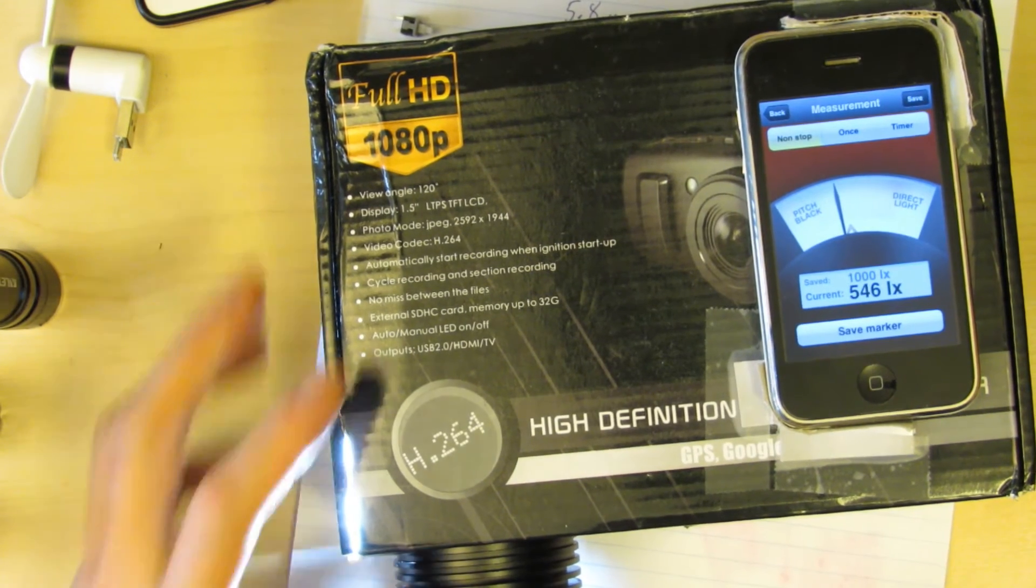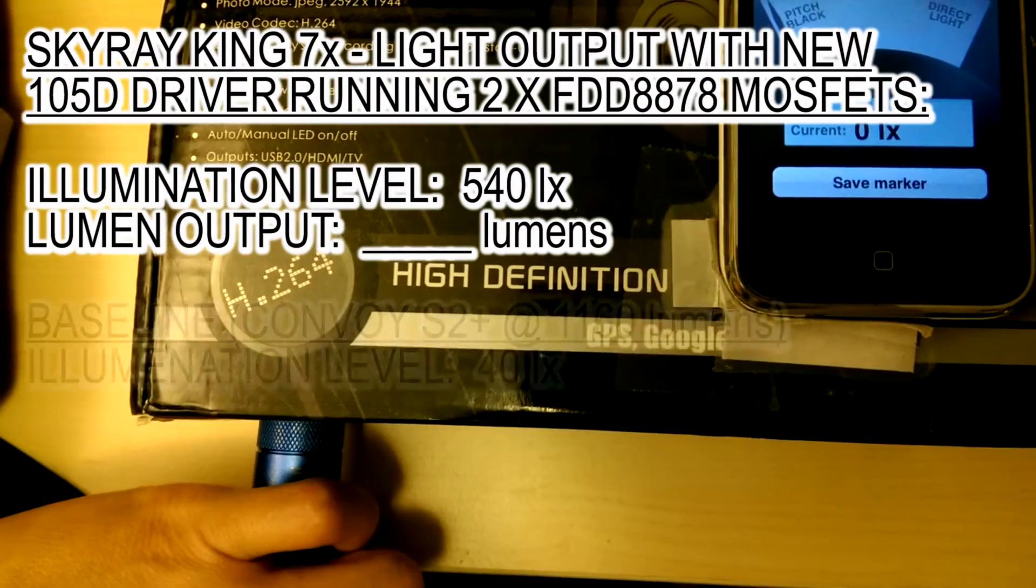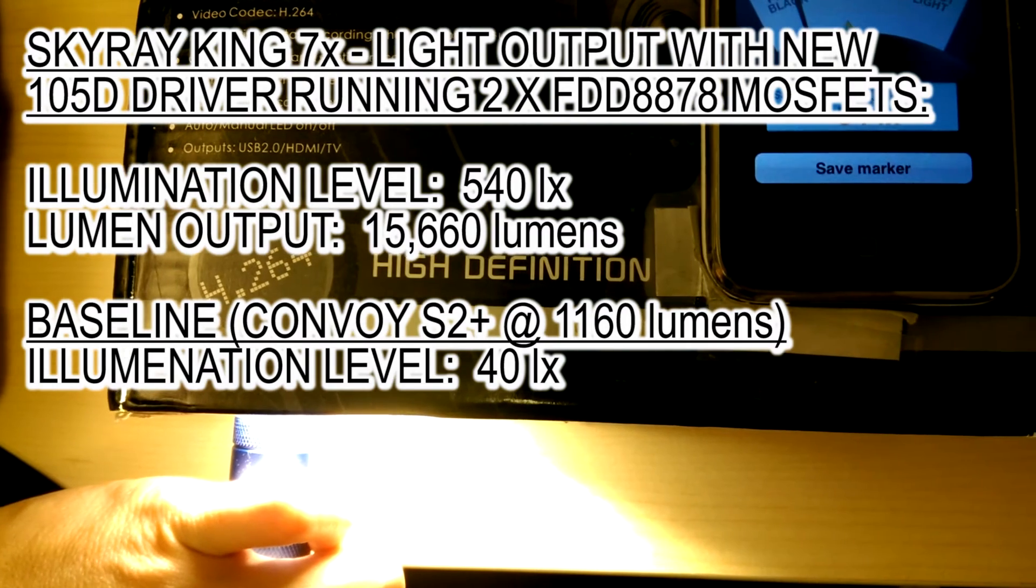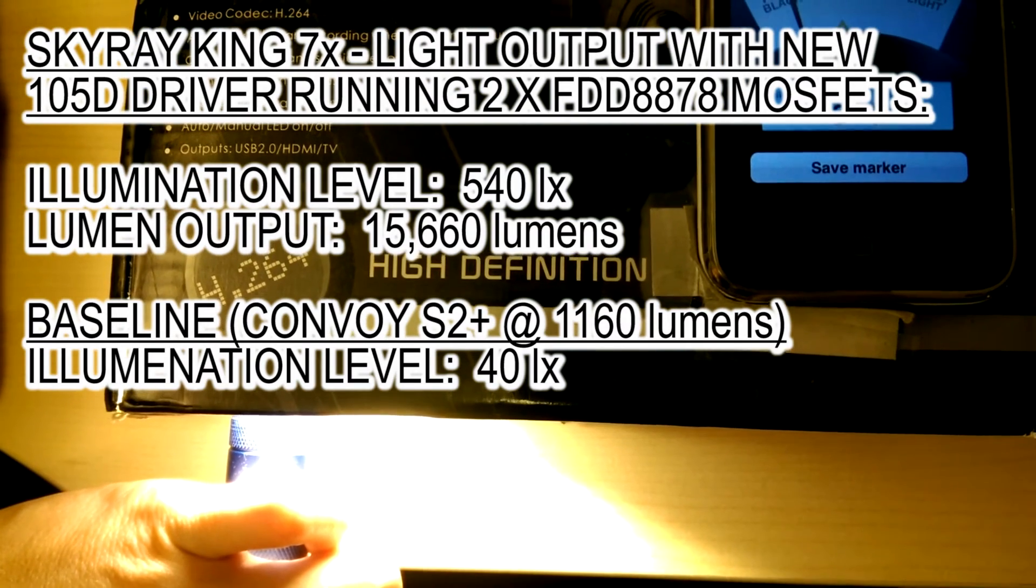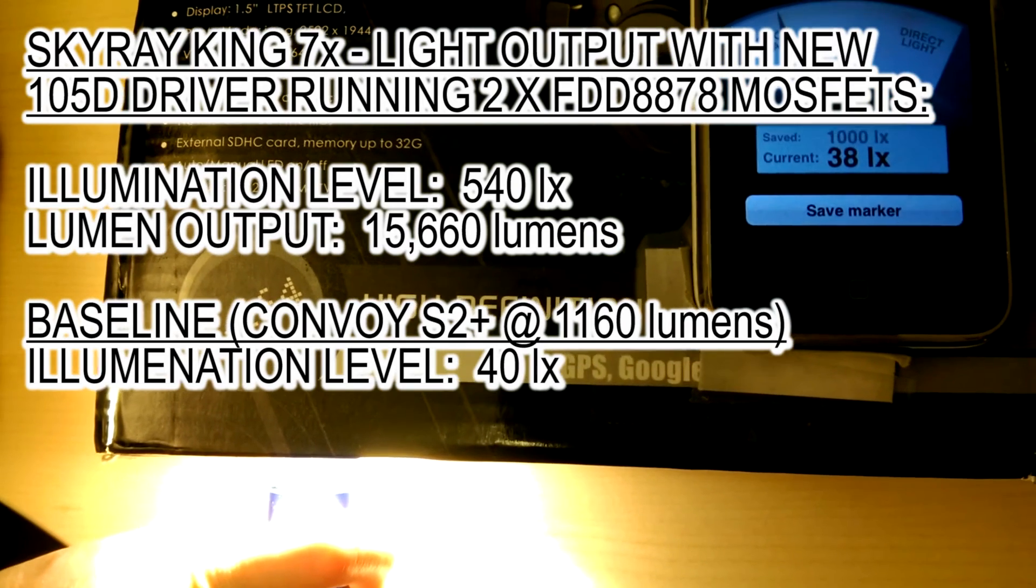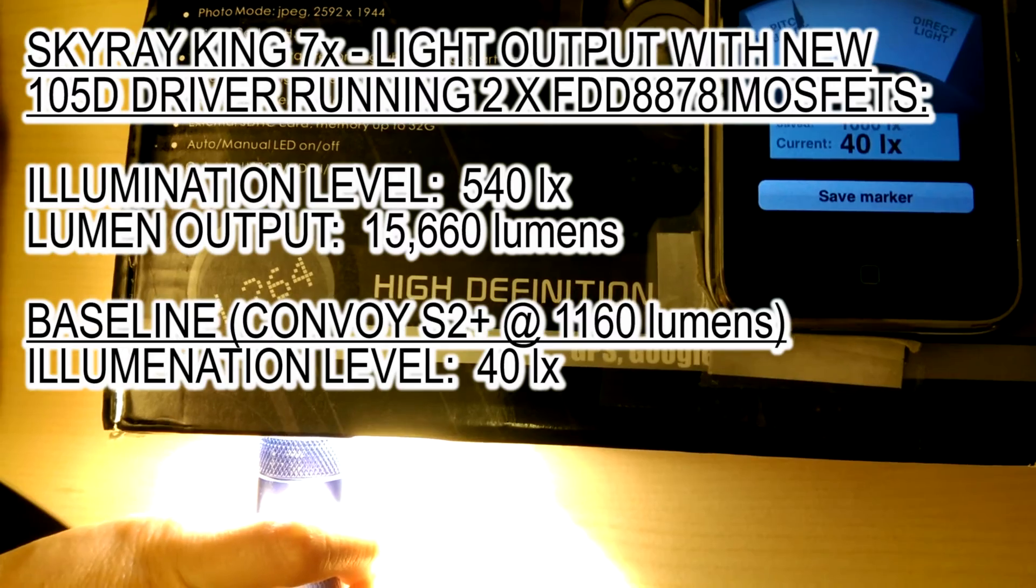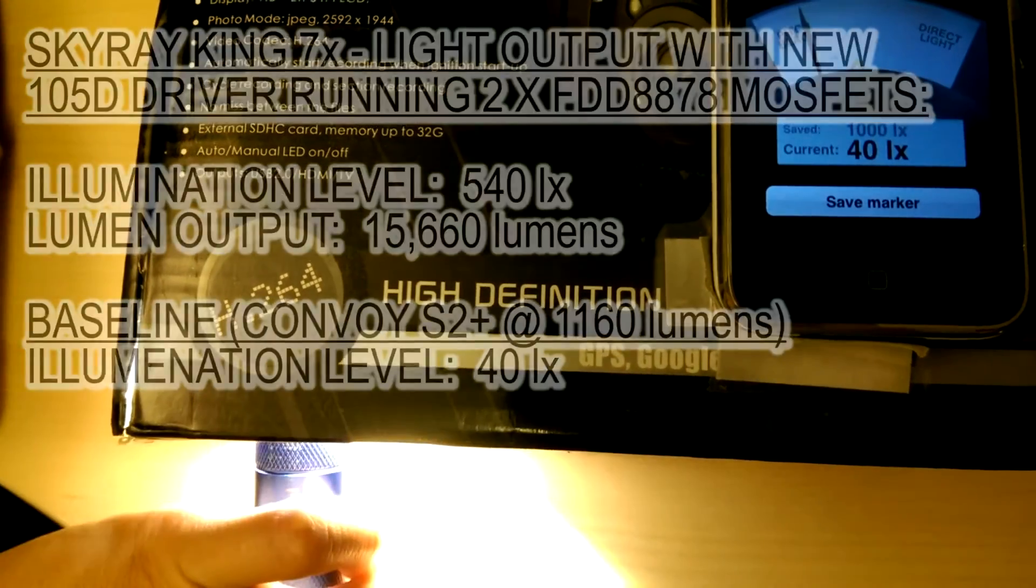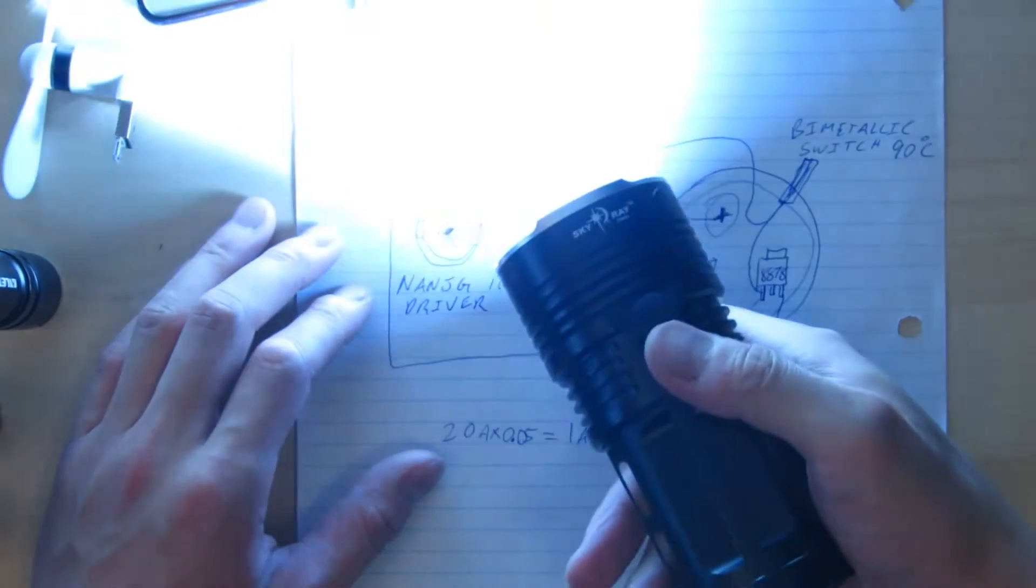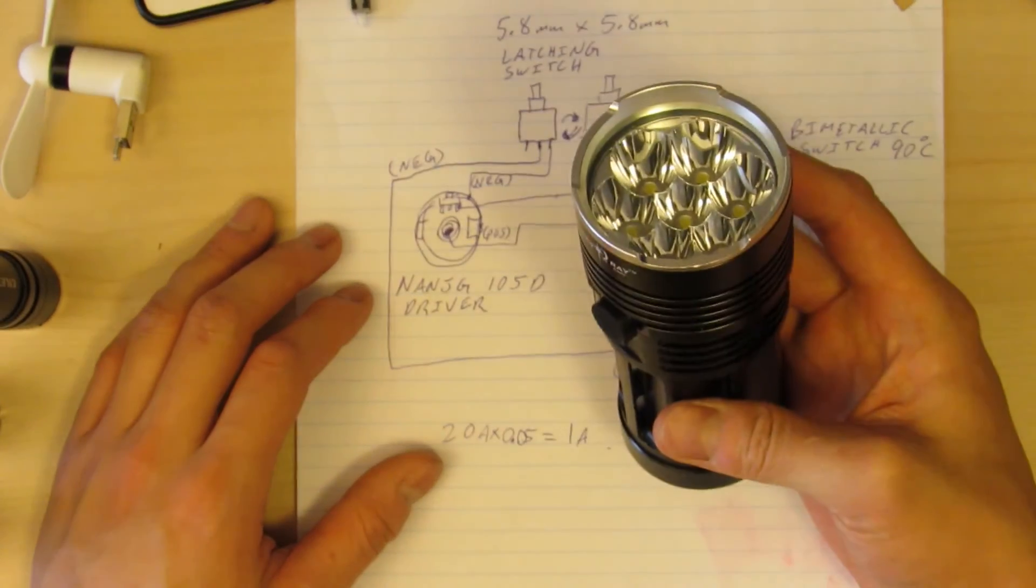On high, it's now registering 540 lux, which is pretty good. Now we'll test the Convoy S2+. The Skyray King's putting out 15,660 lumens. Since the lumen output and the illumination level have a linear relationship, you can pretty much assume that the Skyray King is putting out 15,660 lumens based on a simple calculation. So it's working pretty well and it's got a nice high output. We can always get to that high output using the memory and turn it off right away instead of going through medium and low.